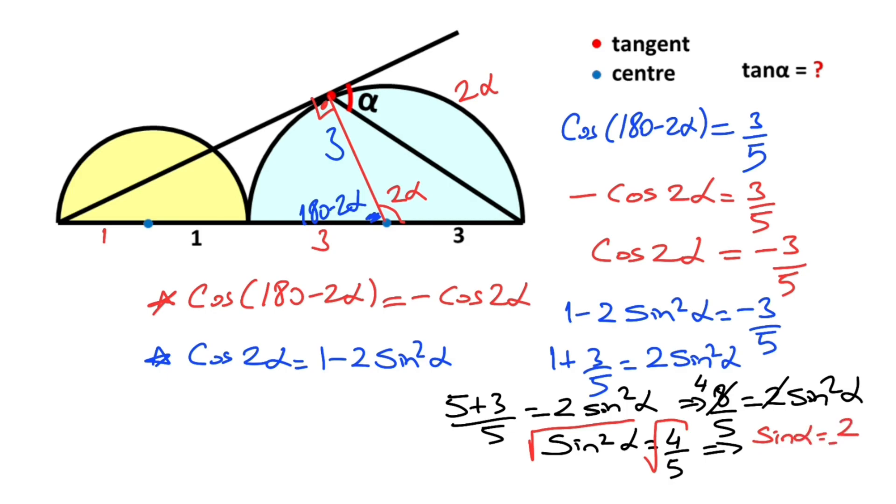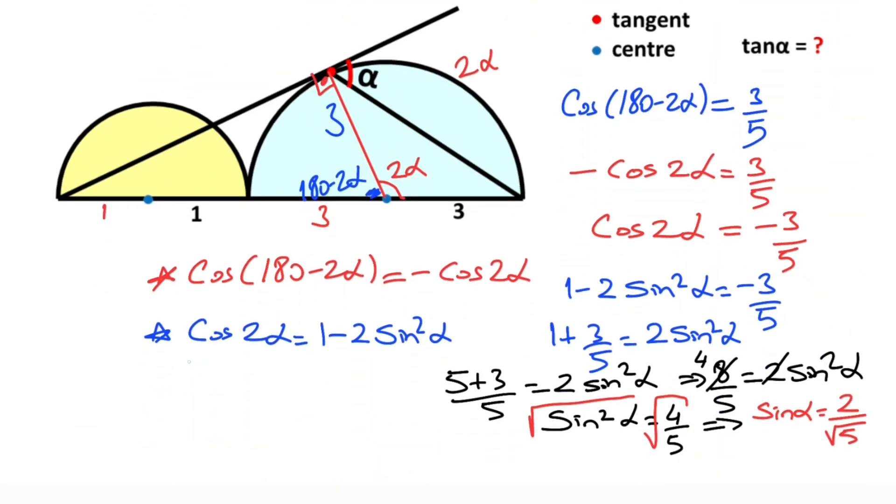So sin(α) equals 2/√5. Now let's draw the right triangle and call this α. We know that here is 2 and the hypotenuse is √5. Let's call here y. If you apply the Pythagorean theorem, 2² + y² = (√5)². So 4 + y² = 5. y² = 1, that means y = 1 unit.